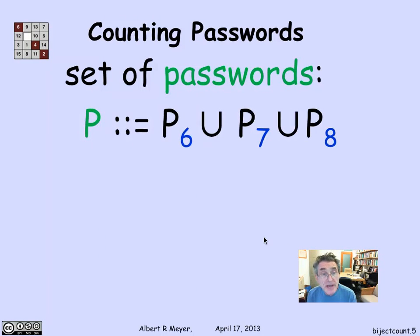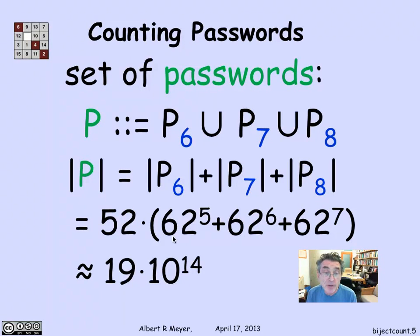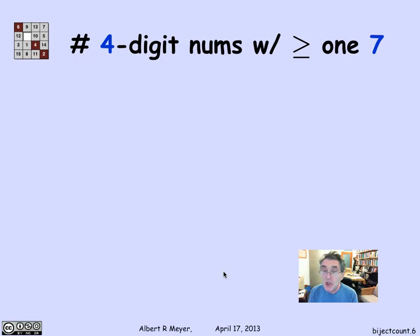What about the passwords? Well, the passwords were then P6 union P7 union P8. And since words of length 6 don't overlap with words of length 7 or 8, this is a disjoint union. And therefore, the total number of passwords as specified is simply the size of P6 plus the size of P7 plus the size of P8. There's the formula when I plug in, and it turns out to be a good size number, 19 times 10 to the 14th. That's one simple example where I'm translating a spec into something that I can express easily as a product and sums and disjoint sums of stuff that I already know the size of.